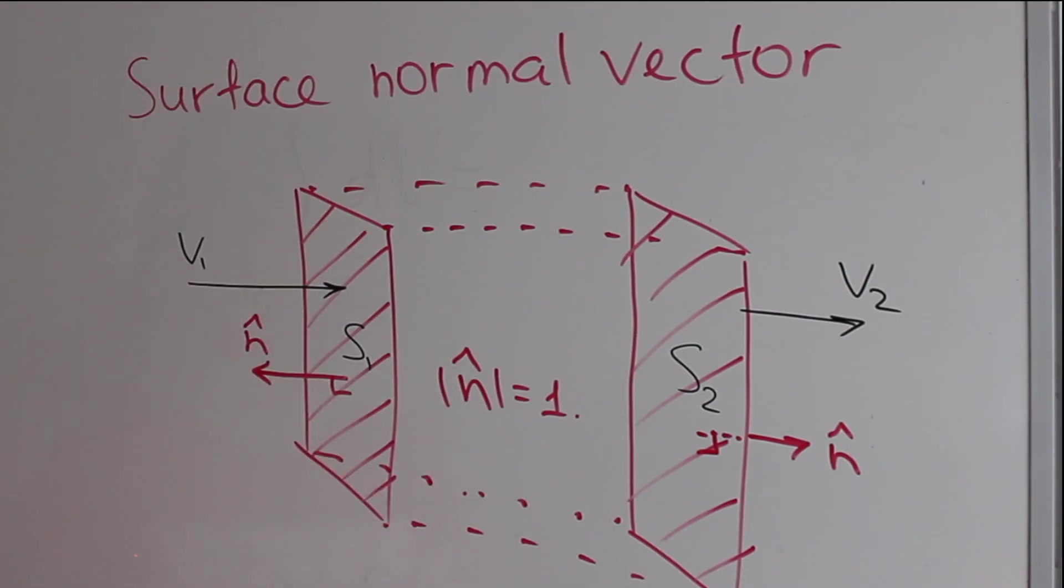So why do we call it n hat? Because n stands for normal and hat stands for unit vector. So we don't even have to write this. It's just going to be n hat and everyone in the aerospace community will understand that it's normal unit vector.